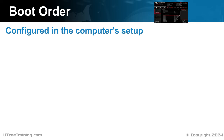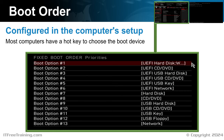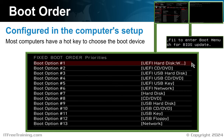The boot sequence of a computer is configured in its system setup, allowing you to specify the order in which different devices are checked for a bootable system. Additionally, most computers offer a hotkey option at startup to specify which device you want to boot from. Pressing this key during the boot process opens a menu where you can choose a specific device on a one-time basis, adding flexibility without altering permanent settings in system setup.